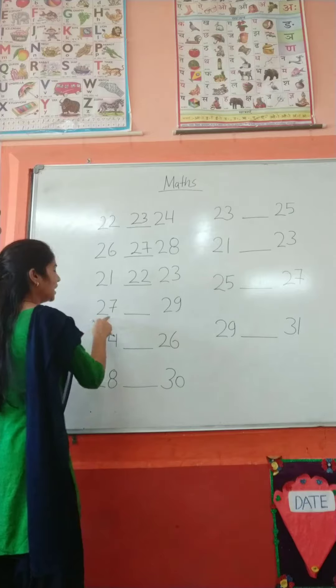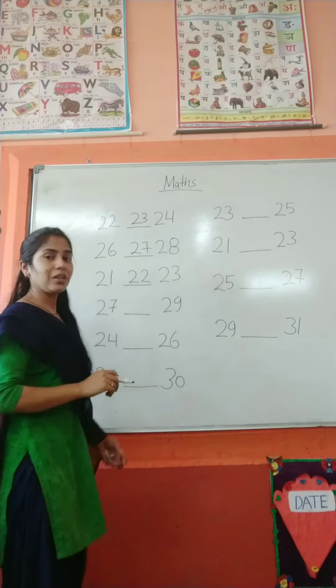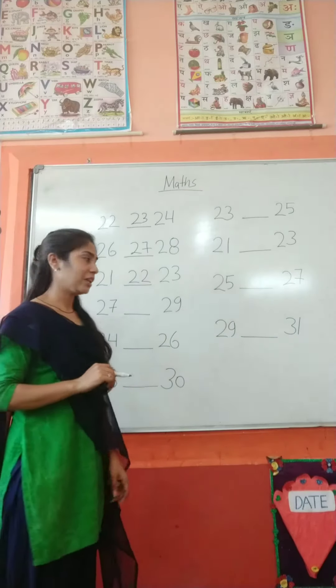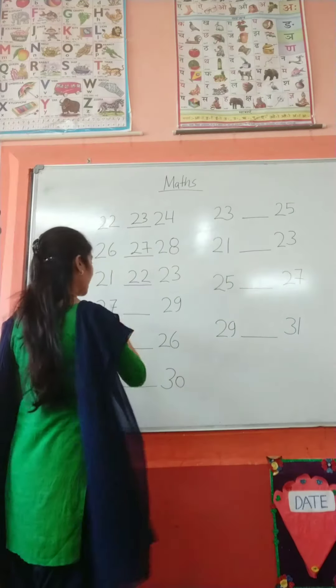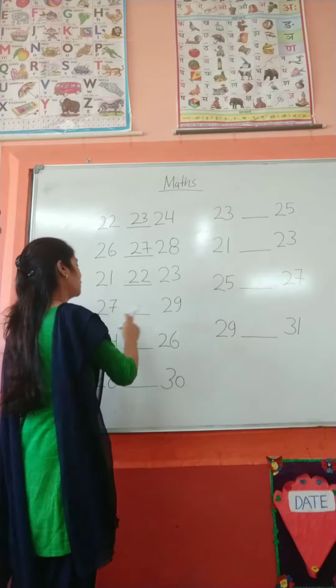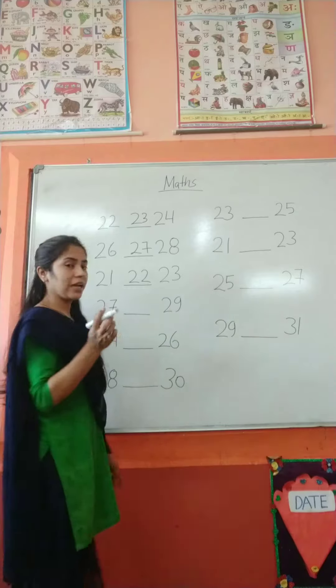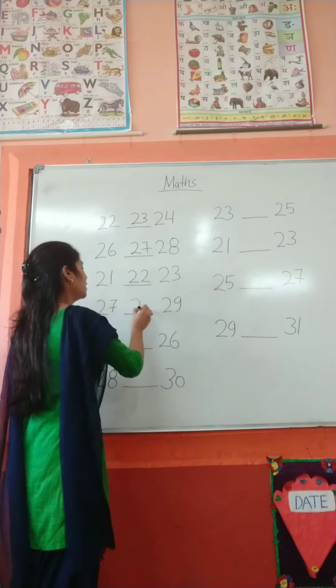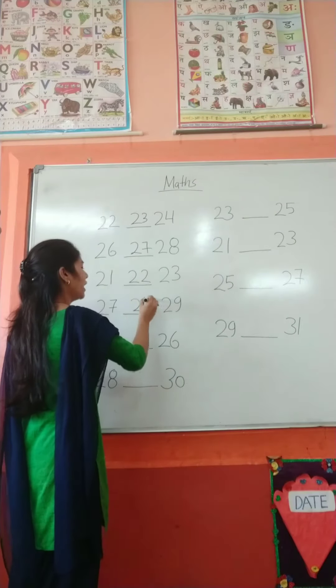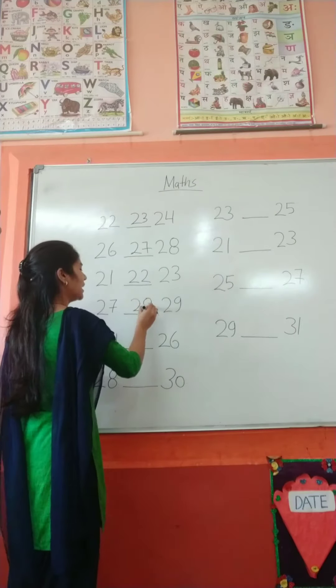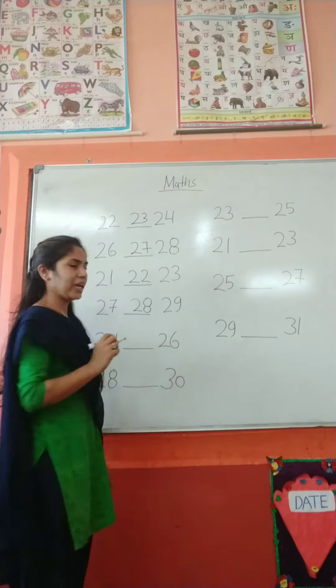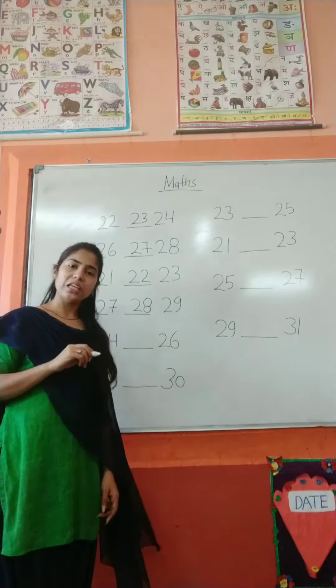And here is number 27. What number counts between 27 and 29? The answer is 28.